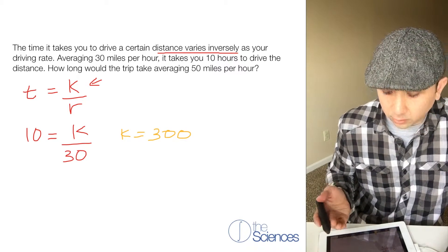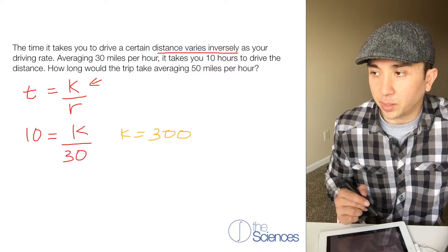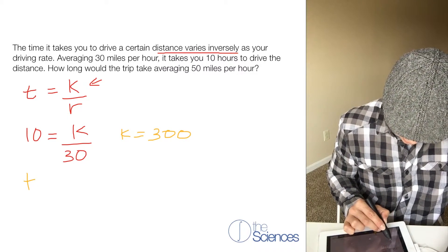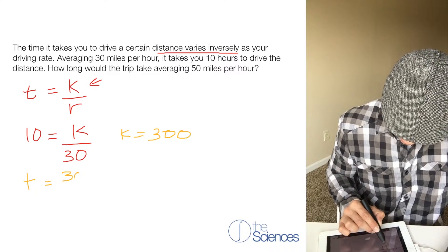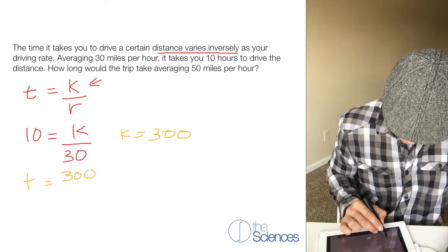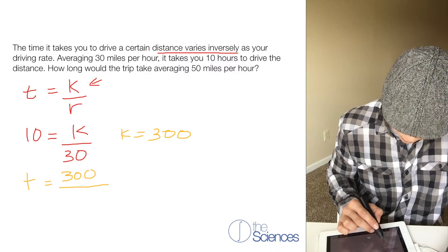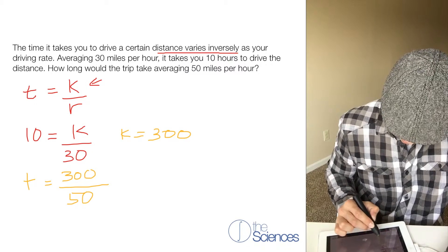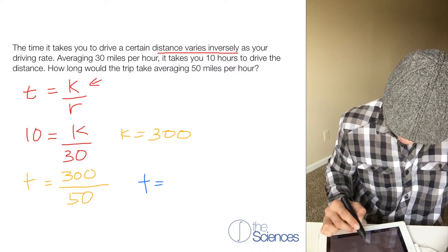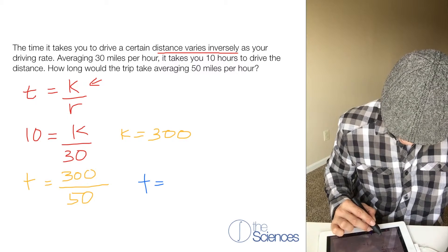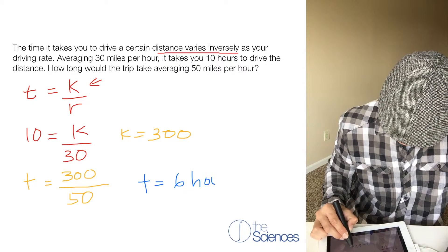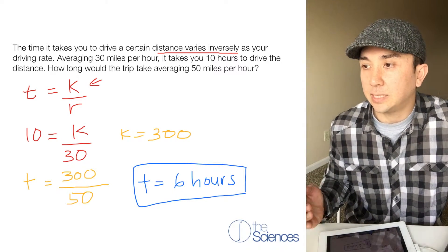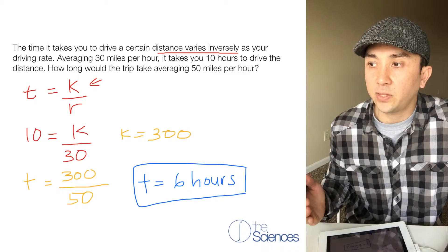Now we want to find out how long the trip would take averaging 50 miles per hour. Now our t equals 300, and we want to find out how long it would take to travel 50 miles per hour. Now t equals 300 divided by 50 is 6 hours. It would take the trip 6 hours to travel 50 miles per hour.